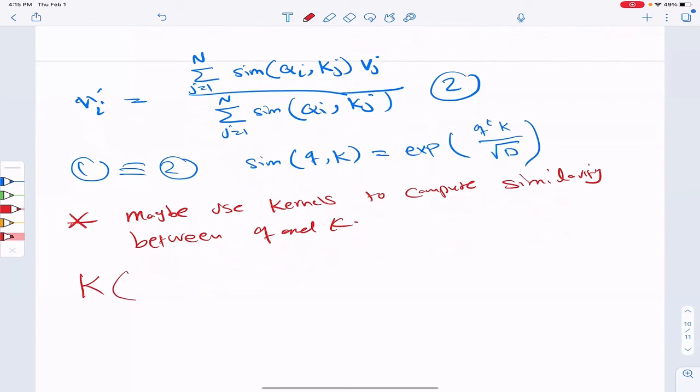Maybe use kernel to compute similarity between q and k. So kernel between a vector q and a vector k is defined as the inner product between a transformation of q and a transformation of k. Let's call that transformation phi, phi q transpose times phi k. This transformation is fixed and so you pick it ahead of time. You can use a polynomial function degree two, you get polynomial kernel. You can use Gaussian kernel. You can use other types of transformations.